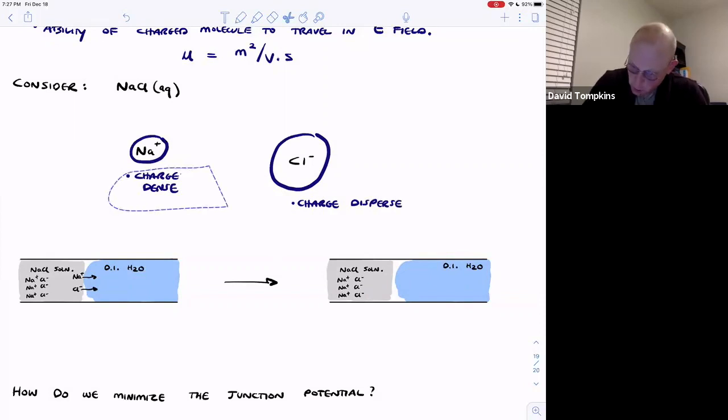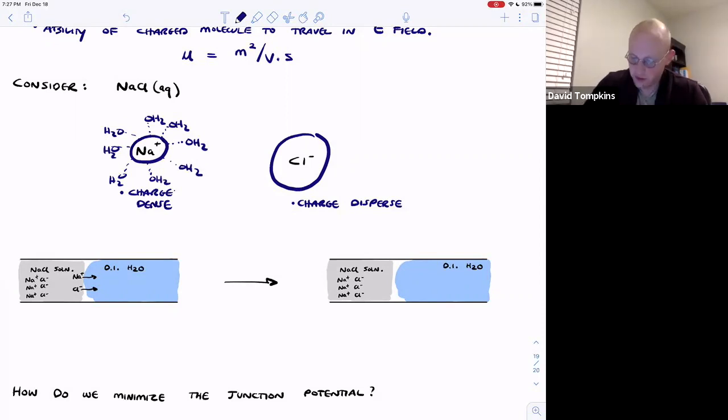So because sodium is more charge dense in water, it's not going to sit by itself. It's going to interact with some partial negative charge that it can find in the solution, and that partial negative charge is going to be the oxygen of the water molecule. So several water molecules will solvate or hydrate this sodium ion to create this hydration sphere.